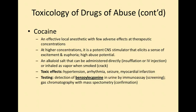Cocaine is an effective local anesthetic at therapeutic concentrations, but at higher concentrations it's a potent central nervous system stimulator that gives a sense of excitement and euphoria. It's very highly addictive — once people try it once or twice, they become very addicted. It can be taken through insufflation, IV injection, or inhaled as a vapor or smoked as crack. Toxic effects include hypertension, arrhythmia, seizure, or heart attack. We detect benzoylecgonine — the byproduct of cocaine — in the urine by immunoassay, and use gas chromatography and mass spectrometry for confirmation.